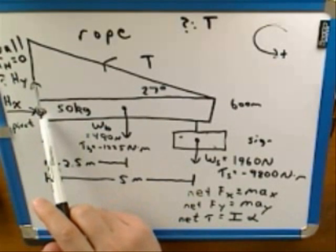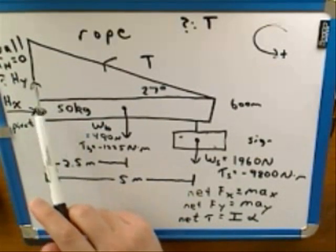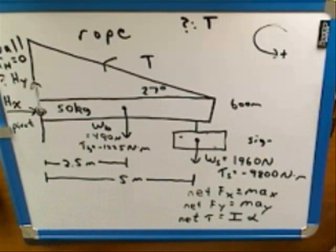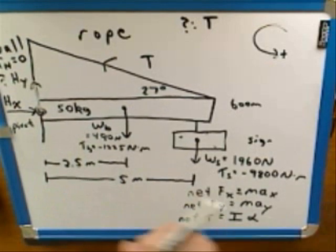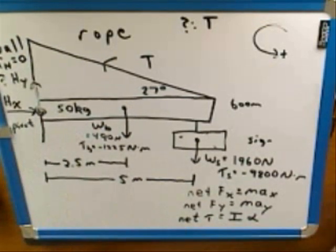This is the real reason that it's good to choose the hinge here as the pivot. The real reason that it's best to choose the hinge as the pivot is that way you don't need to worry about any torques from the hinge forces.